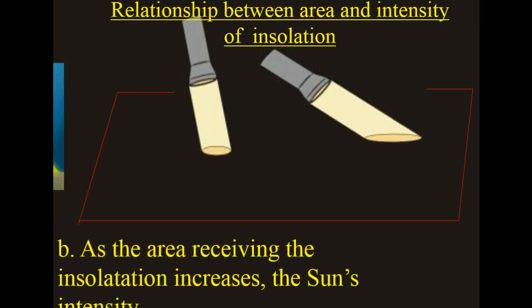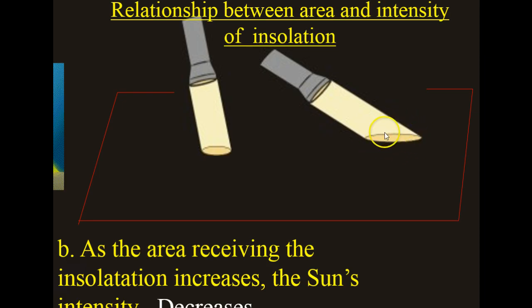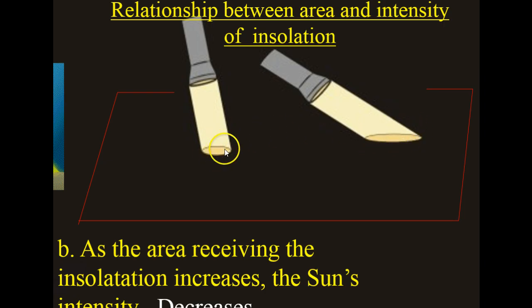And as the area receiving the insolation increases, the sun's intensity will decrease. That's another way of saying the greater span, or greater area receiving the sun's energy, is not receiving it as intensely as if a smaller area were receiving it.